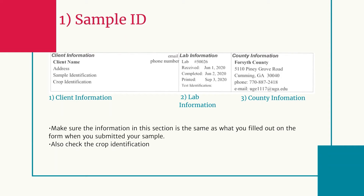The first section is the sample identification section, which is split into three smaller subsections. The first subsection is the client information section. This should have your name and all of your contact information. Double check that your contact information is correct, otherwise we may have given you the wrong report.